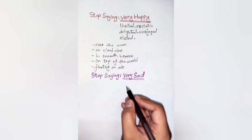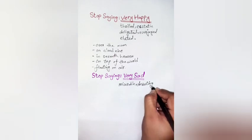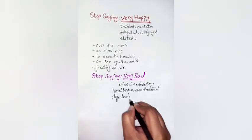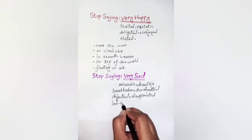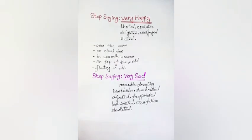Stop saying 'very sad.' Just like happy, sad can sound a bit too dull, especially if you are trying to impress your teacher or you are writing an essay and your vocabulary needs to offer something more. So instead of saying 'very sad,' you could use: miserable, dejected, heartbroken, or devastated. For example: he was heartbroken when his partner left him. She looked dejected when they told her she didn't get the job.